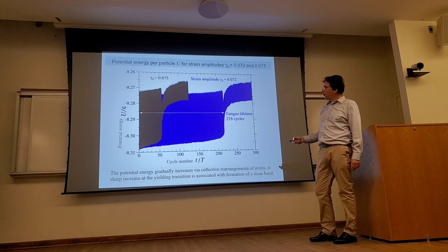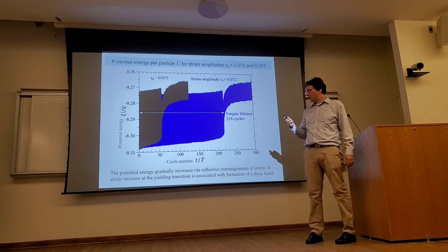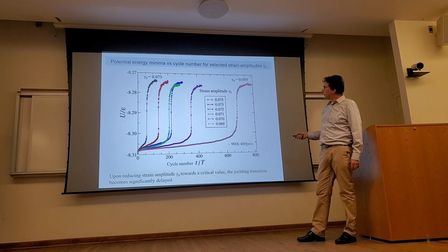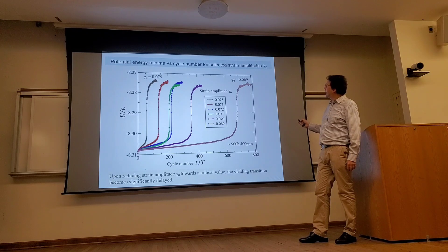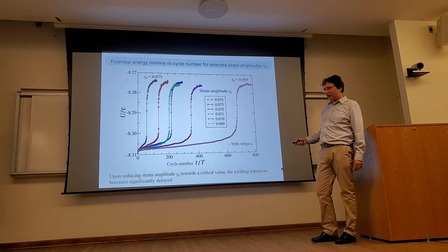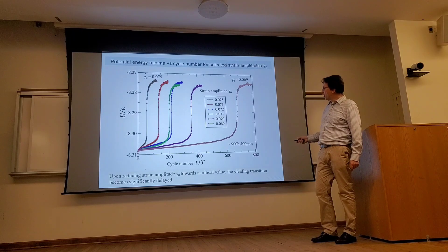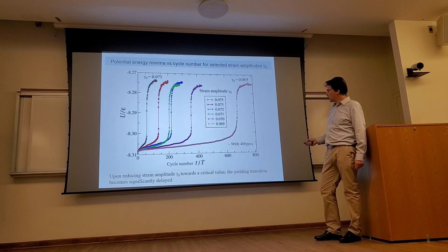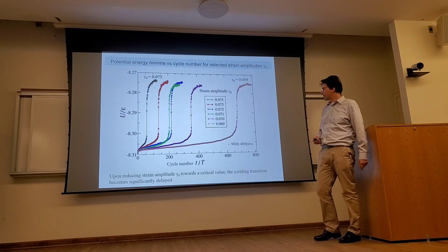In what follows, we focus on the potential energy minima and consider a wider range of strain amplitudes. The results are plotted for potential energy minima versus cycle number. At the lowest strain amplitude, the increase in potential energy due to plastic events is very slow until a clear yielding transition and then formation of a shear band. This is a relatively time-consuming simulation requiring about 900 hours using 400 processors in parallel.